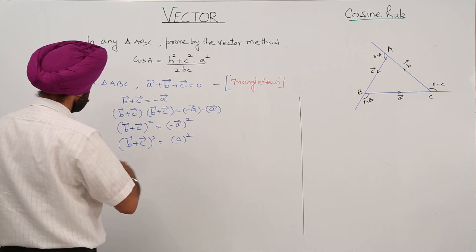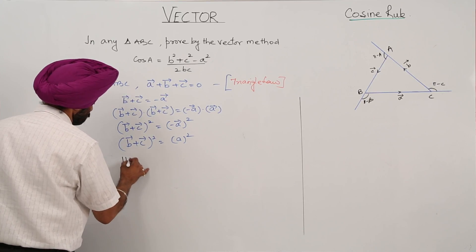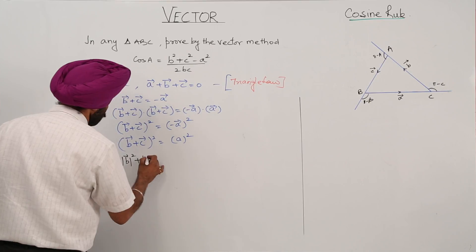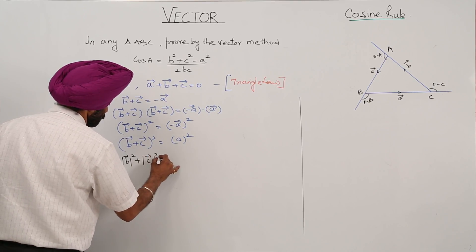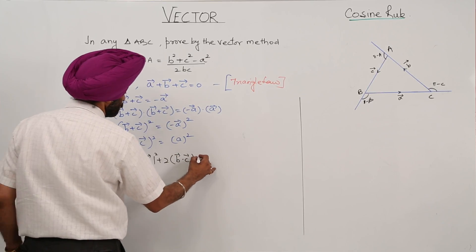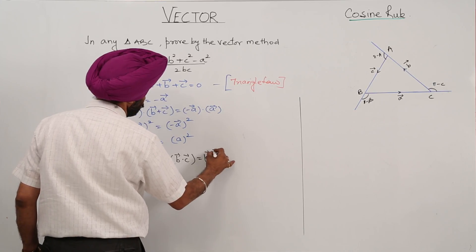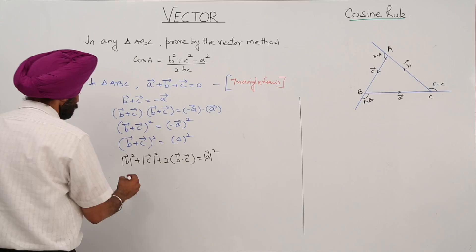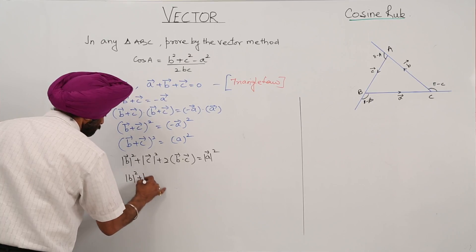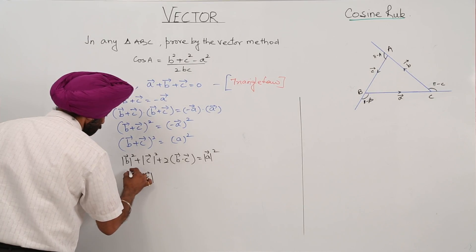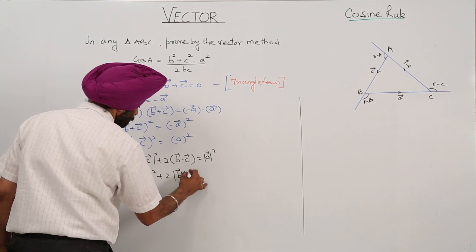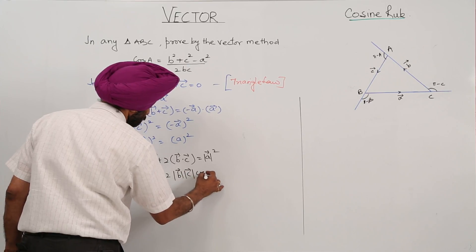Expanding the left side: vector B whole square plus vector C whole square plus 2 times magnitude of vector B times magnitude of vector C times cos of the angle between them.